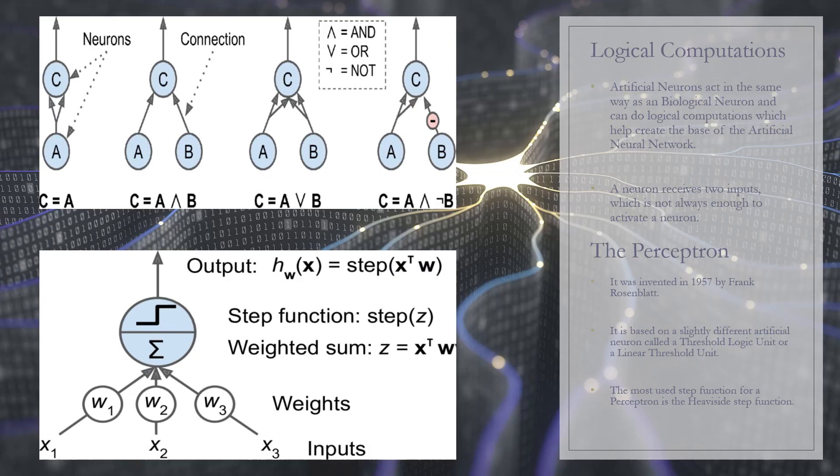Artificial neurons act in a similar way. The first network on the left is the identity function: if neuron A is activated, neuron C gets activated as well since it receives two input signals from neuron A. But if neuron A is off, neuron C is also off. The second network performs a logical AND: neuron C is activated only when both neurons A and B are activated, whereas in the third network either input can be active to produce a logical OR.